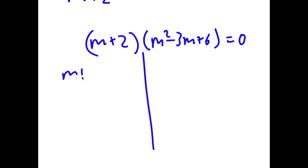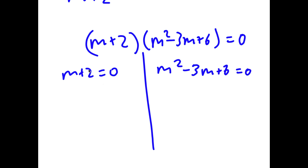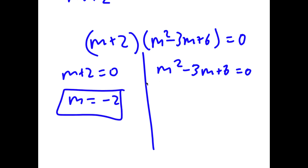So now to solve this, we have two equations: m plus 2 is equal to 0, and m squared minus 3m plus 6 is equal to 0. From m plus 2 equals 0, we already know that m equals negative 2. From m squared minus 3m plus 6 equals 0, we have to use the quadratic formula. You should get that m is equal to 3 plus or minus the square root of 15i, all over 2.